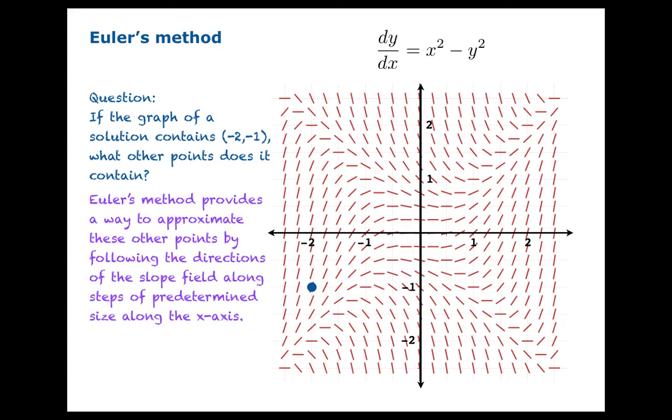The method is to follow along the tangent slope by a fixed horizontal displacement. So if we took that displacement size, the step size, to be 1, what we would do in this method is to start at negative 2, negative 1. We would draw the line through that point that is parallel to the slope at that point, and we would move along that line until we've gone one unit along the horizon. And we'd stop.